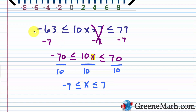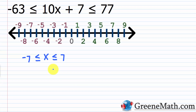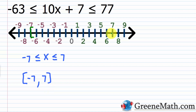In interval notation, we have non-strict inequalities, so put a bracket next to negative 7, then comma, then positive 7 with another bracket. Graphically, find negative 7, put a bracket, find positive 7, put a bracket, and shade everything in between. The solution for x is any value between negative 7 and 7, with both endpoints included because we have non-strict inequalities.